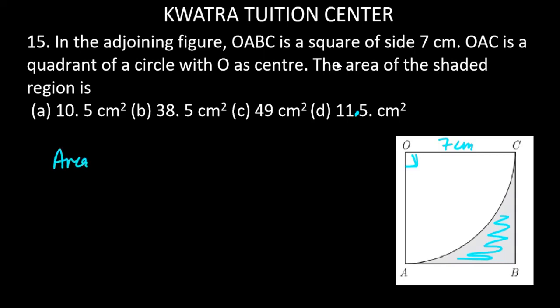We have to take out the area of the square first, which is 49, because it is 7 squared.